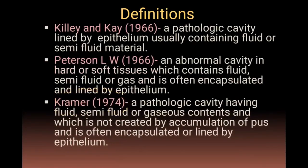The most commonly accepted definition is the Kramer one: a cyst is a pathological cavity having fluid, semi-fluid, or gaseous contents, which is not created by accumulation of pus, and is encapsulated or lined by epithelium. This epithelial lining is a crucial part of a cyst.